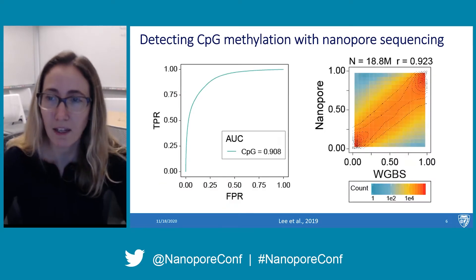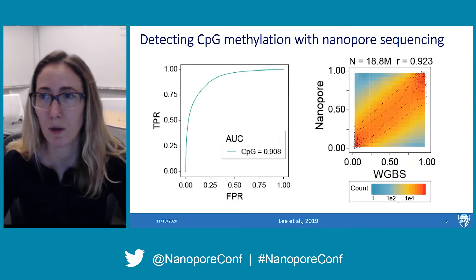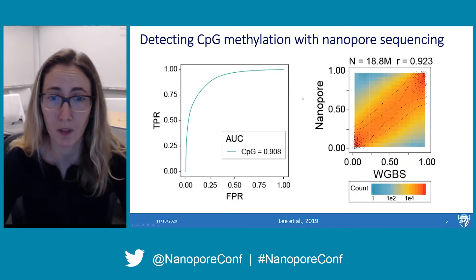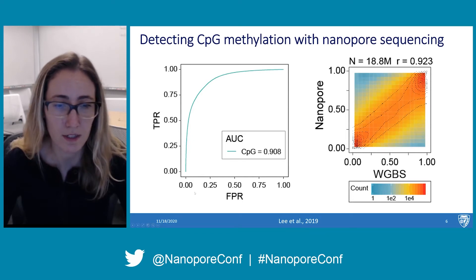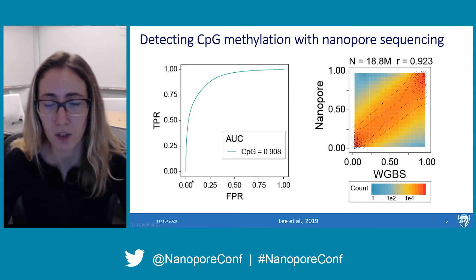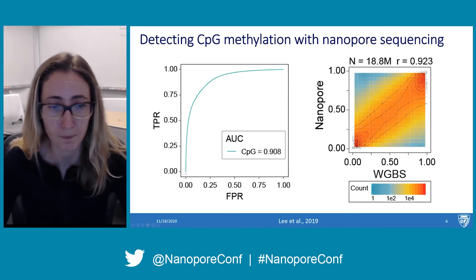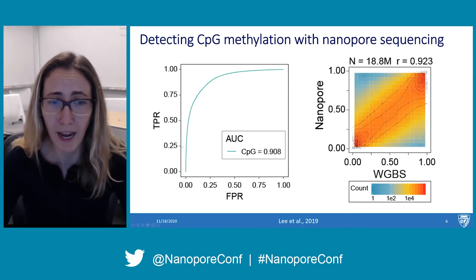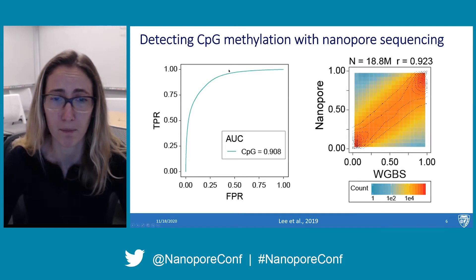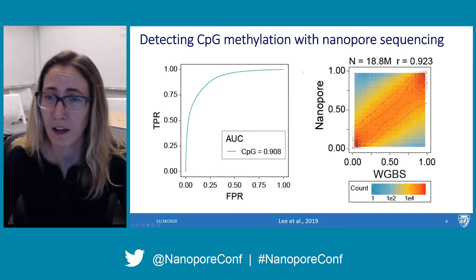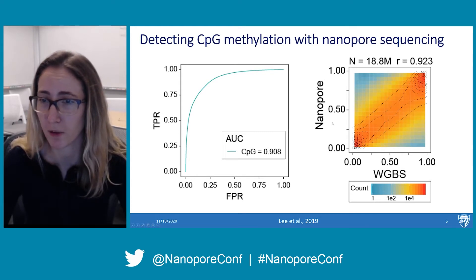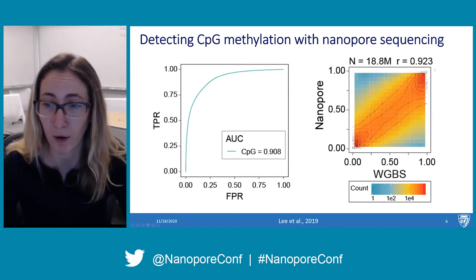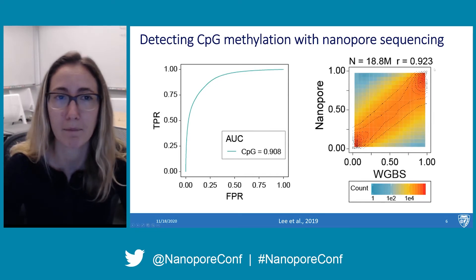We detect these changes with a software tool called Nanopolish. Nanopolish is highly accurate with an area under the curve greater than 0.9, and highly concordant with whole genome bisulfite sequencing with an R-squared value of greater than 0.9.